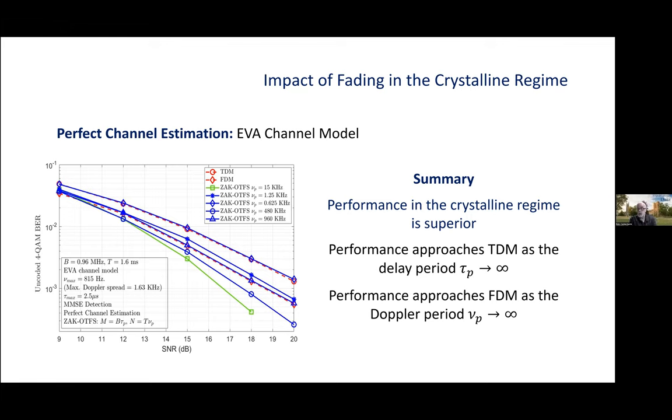So, we move along the hyperbola, tau_p, nu_p equals 1, by choosing different periods. We see the performance is superior in the crystalline regime, that's the green curve.